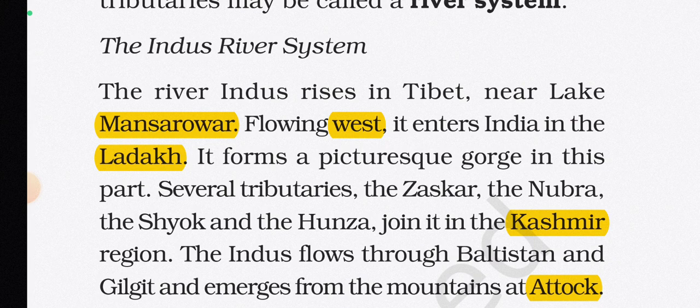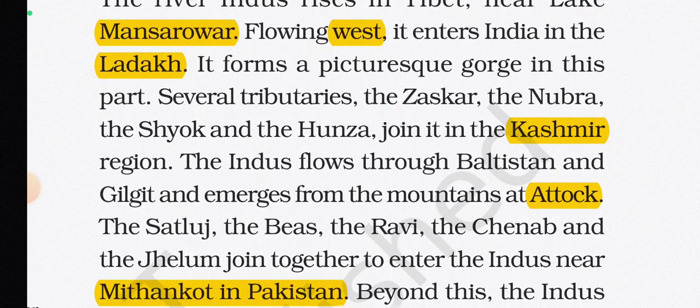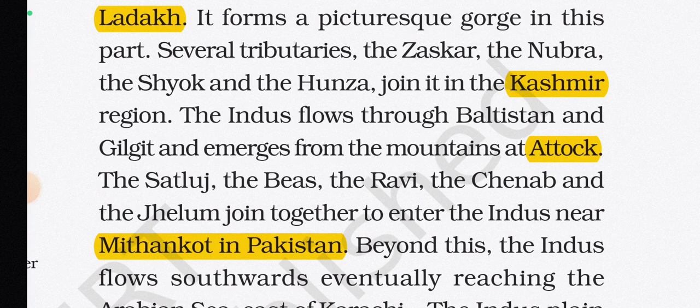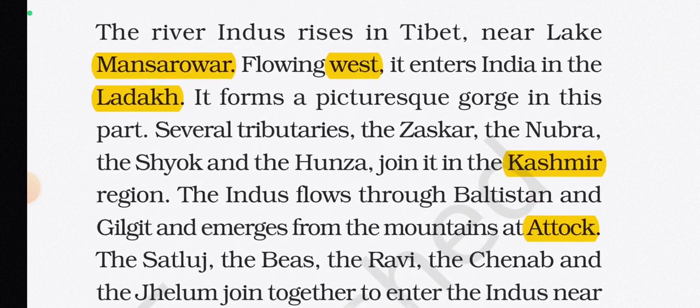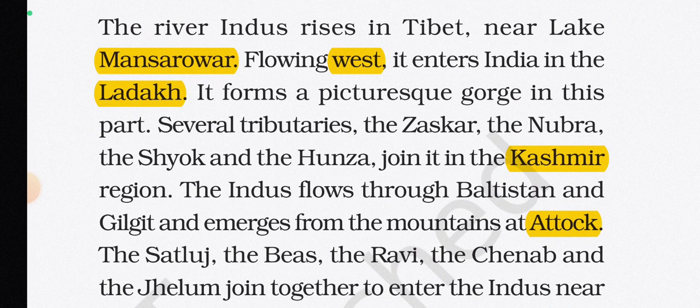Several tributaries — the Zaskar, the Nubra, the Shyok, and the Hunza — join the Indus in the Kashmir region. The Indus flows through Baltistan and Gilgit and emerges from the mountains at Attock. The Satluj, Beas, Ravi, Chenab, and Jhelum join together to enter the Indus near Mithankot in Pakistan.